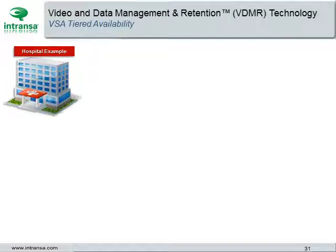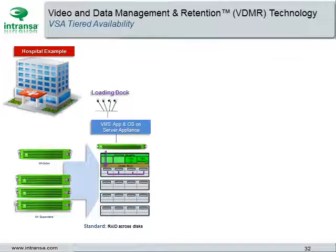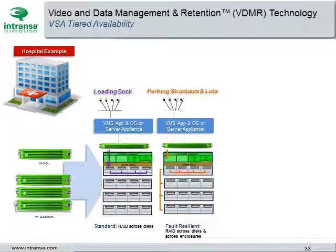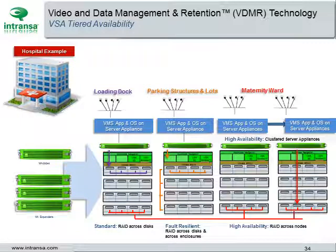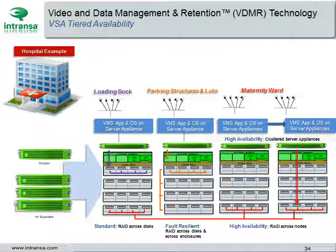To illustrate Tiered Availability in action, consider a real customer example: a large hospital. On their loading dock, they've chosen a standard availability solution with RAID across disks. In parking structures and lots, a fault-resilient configuration is deployed with RAID across disks and enclosures for full fault resiliency. For the maternity ward, which requires 24x7x365 video access immediately available without any risk of loss, both Intransa appliances are clustered for high availability on the server appliance side, with RAID across multiple nodes on the storage side.